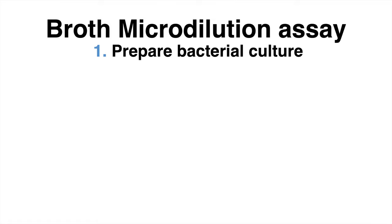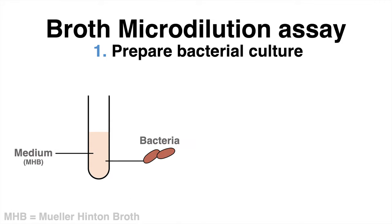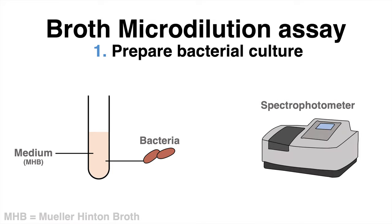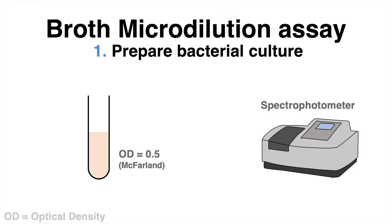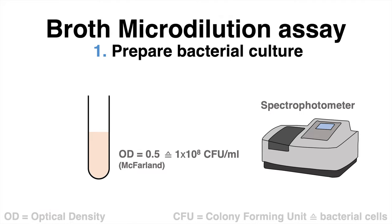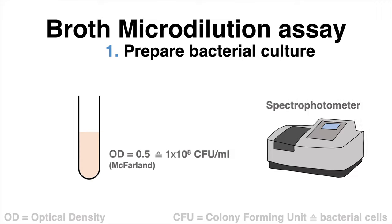In a first step, the bacterial culture is prepared. The culture contains a special medium and bacteria. With the help of the spectrophotometer that measures the turbidity, the optical density is adjusted to 0.5, which equals a defined number of bacterial cells per ml.